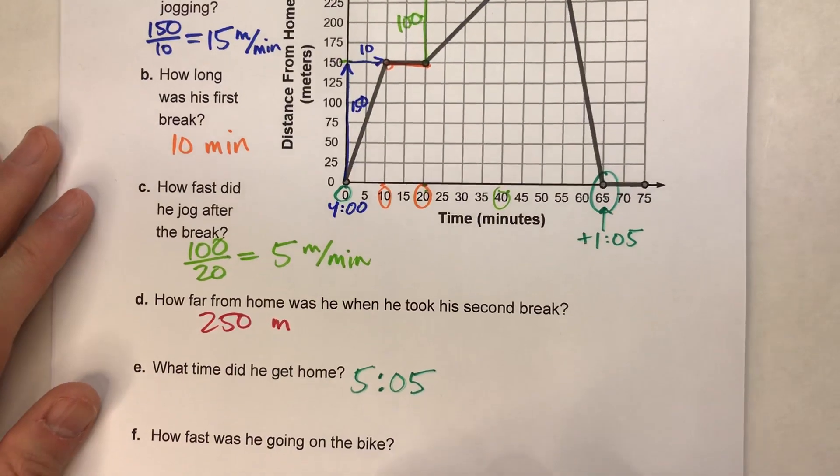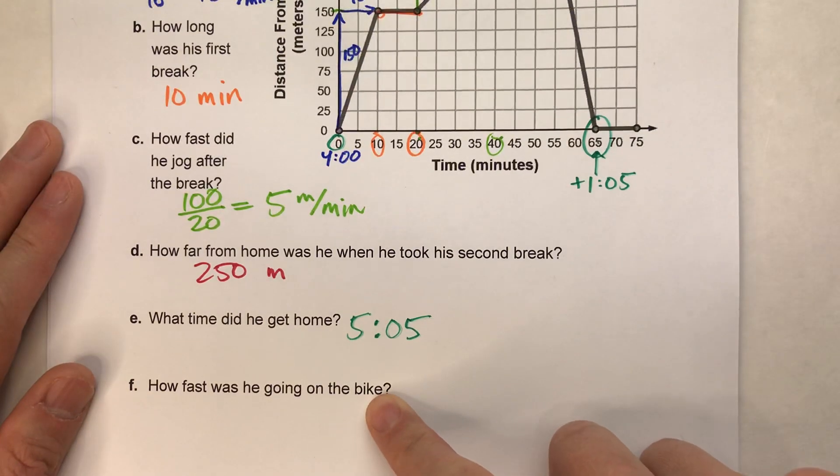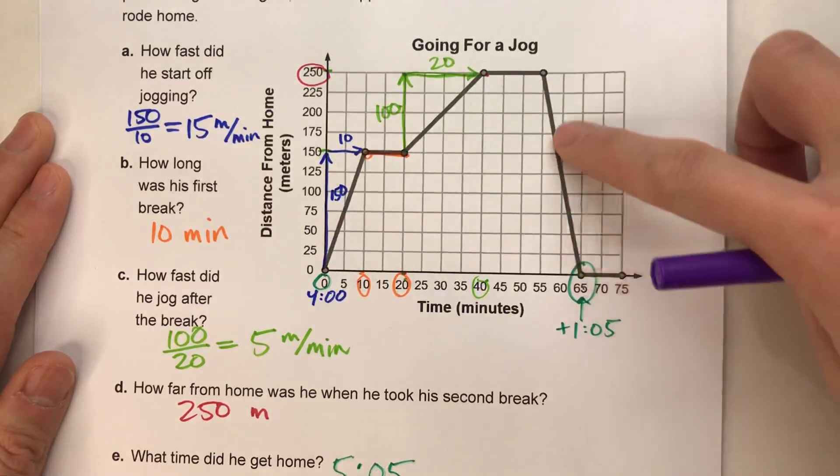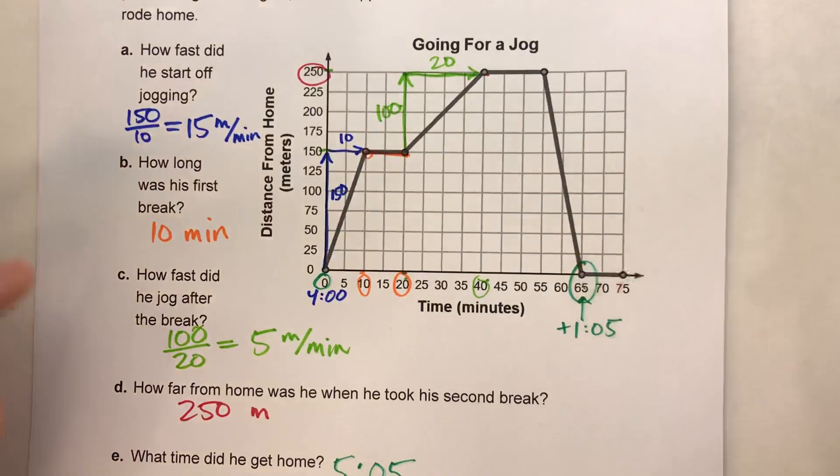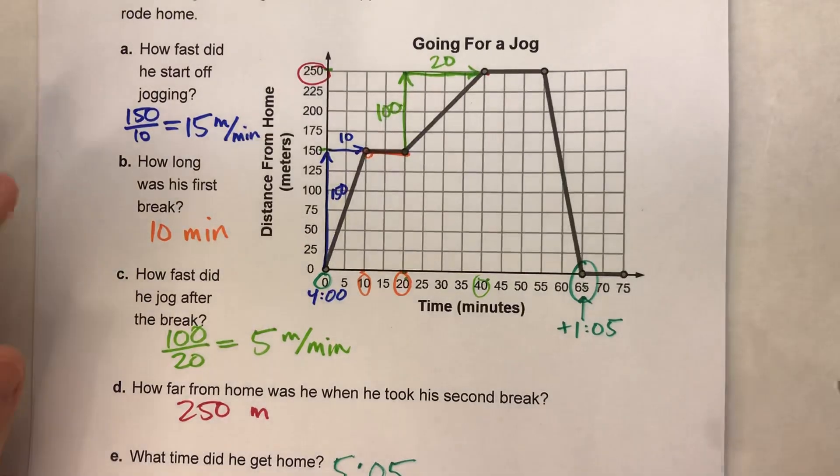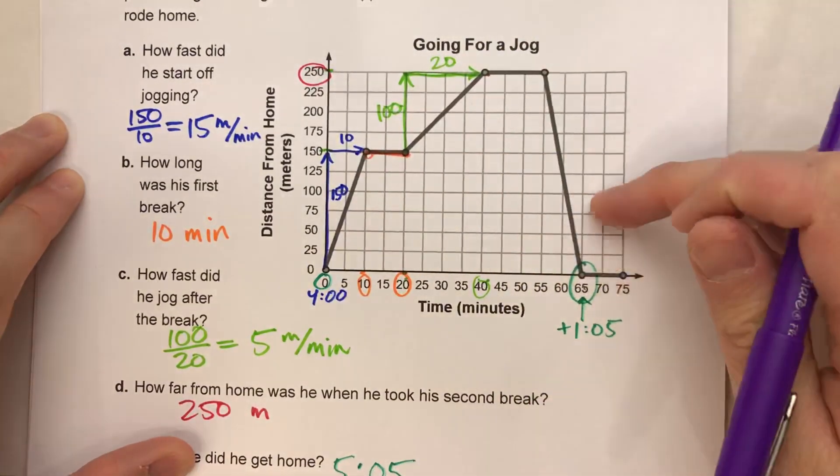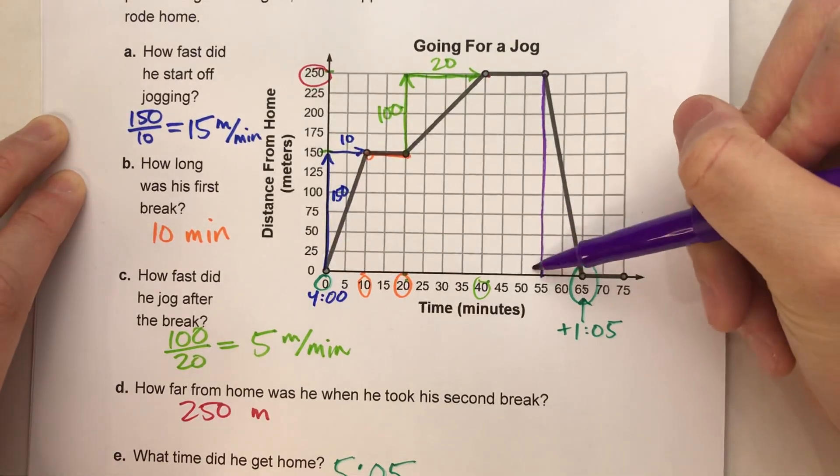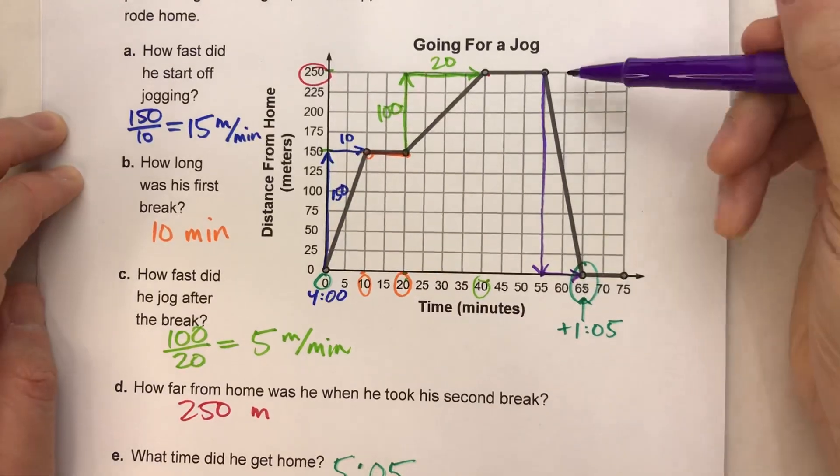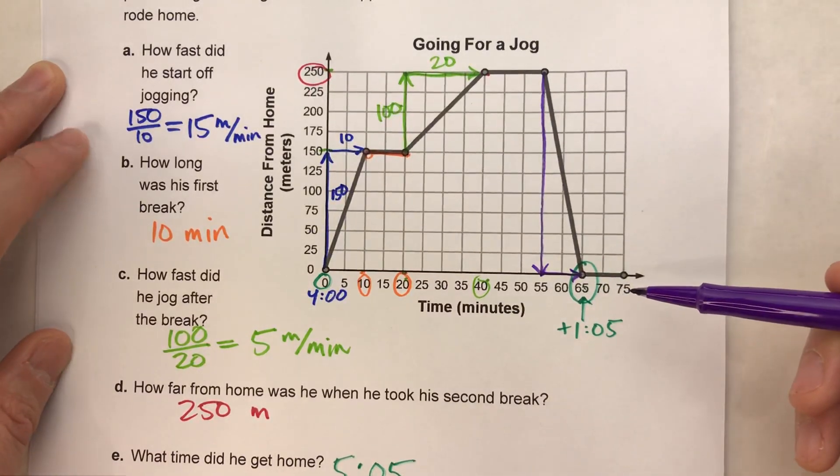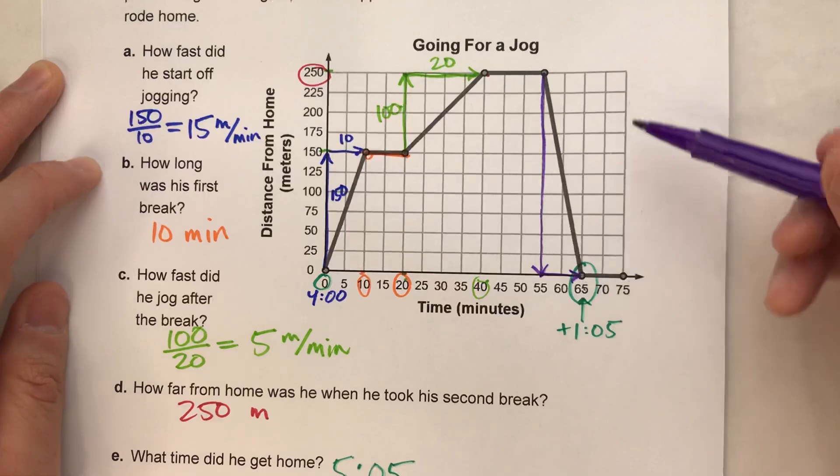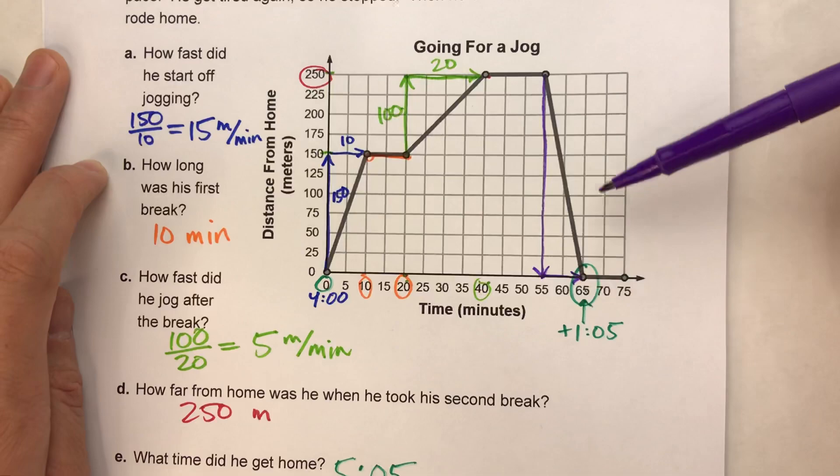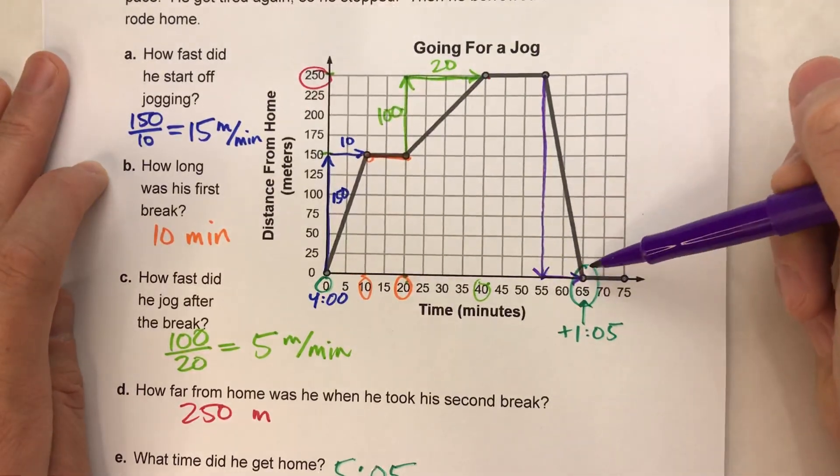Alright. That takes us to the last question. How fast was he going on the bike? Alright. So this is when he was biking home. So we want to know how fast he was going there. So again, when we want the speed, what we want on our graph here is the slope. So we need to find the rise and the run. And notice the slope is going to be negative in this case. Now, that doesn't mean he's going negative speed. What it means is his distance from home is decreasing per minute. And we'll address that in a second.